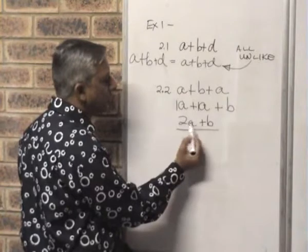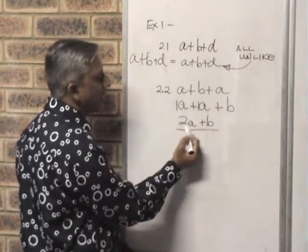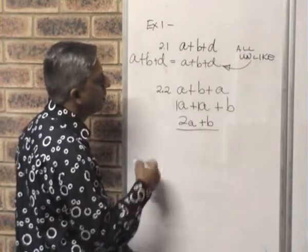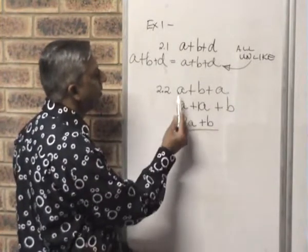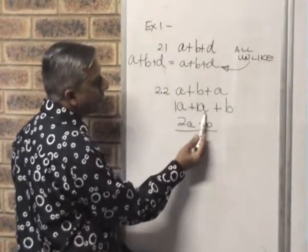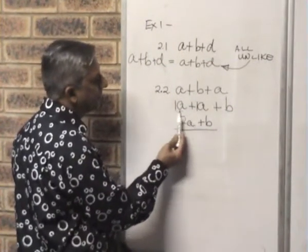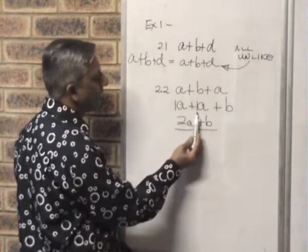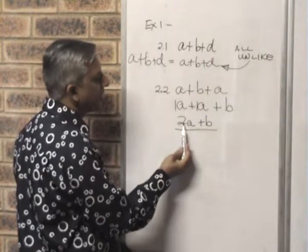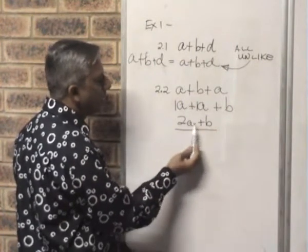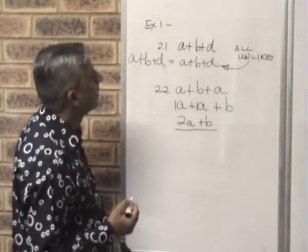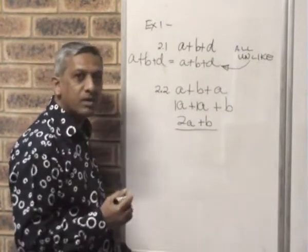These two are now unlike terms, so you cannot add any more. Let me go through this example again: group the like terms, then add the like terms together. 1A plus 1A gives you 2A, and so the final answer is 2A plus B. 2A plus B cannot be added further because they are unlike terms.